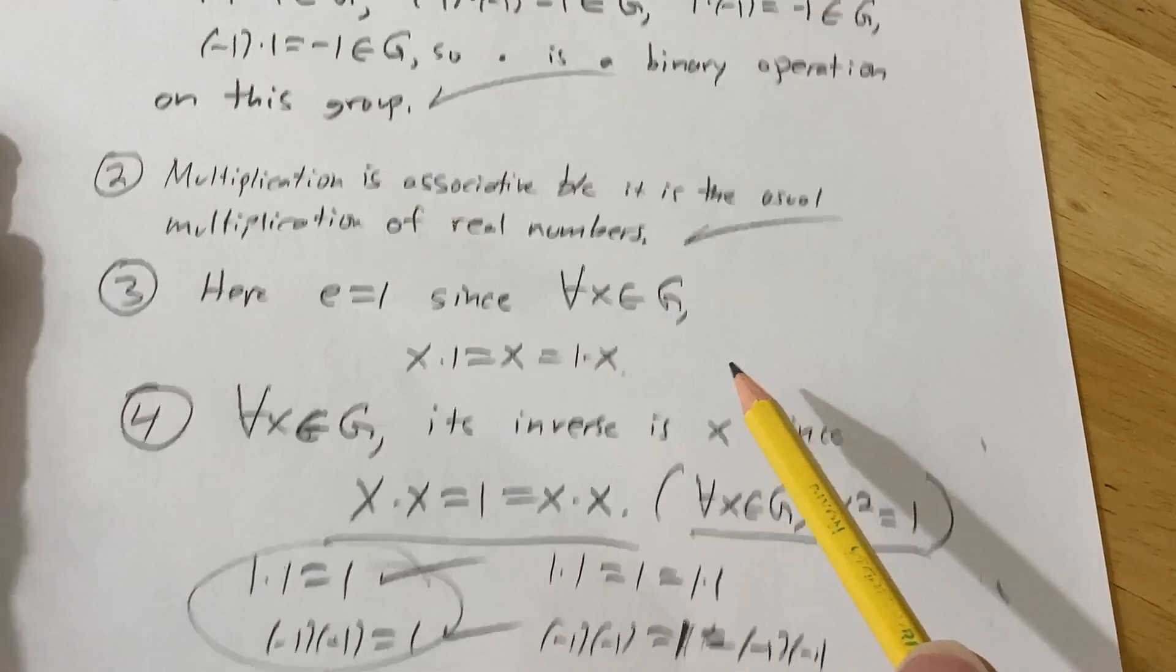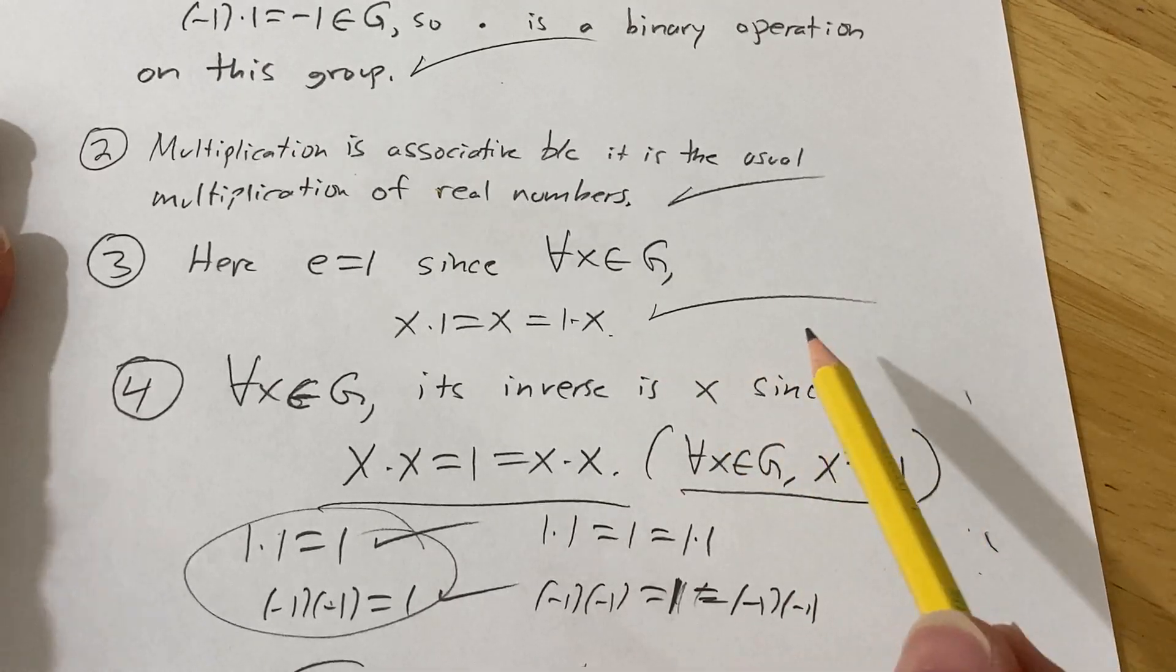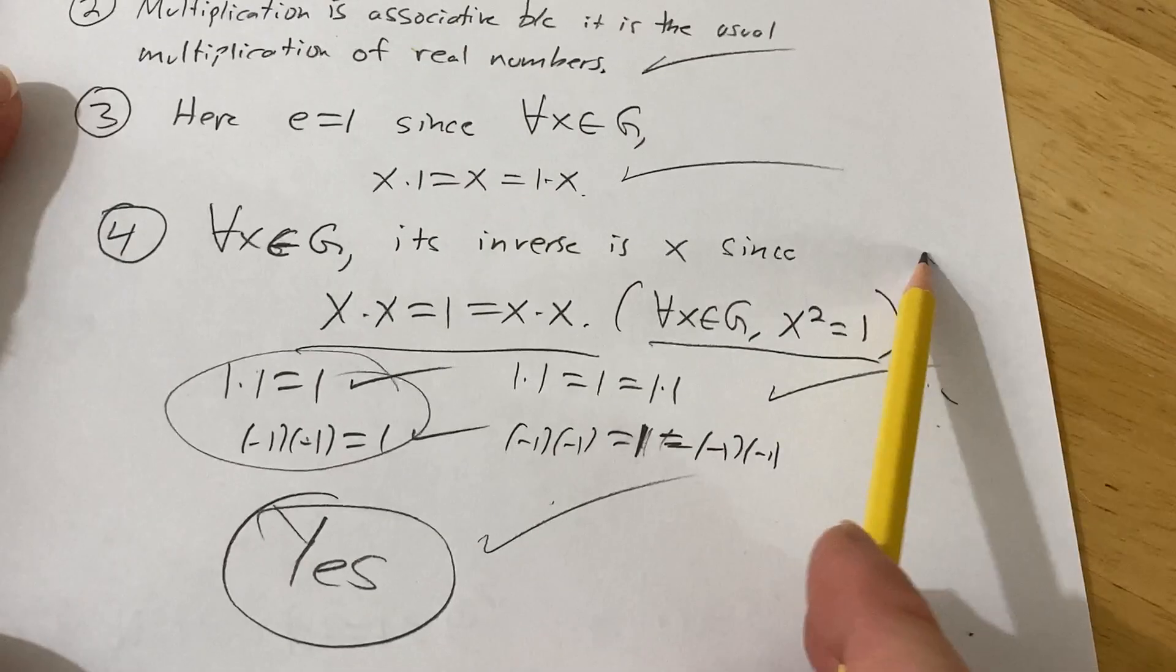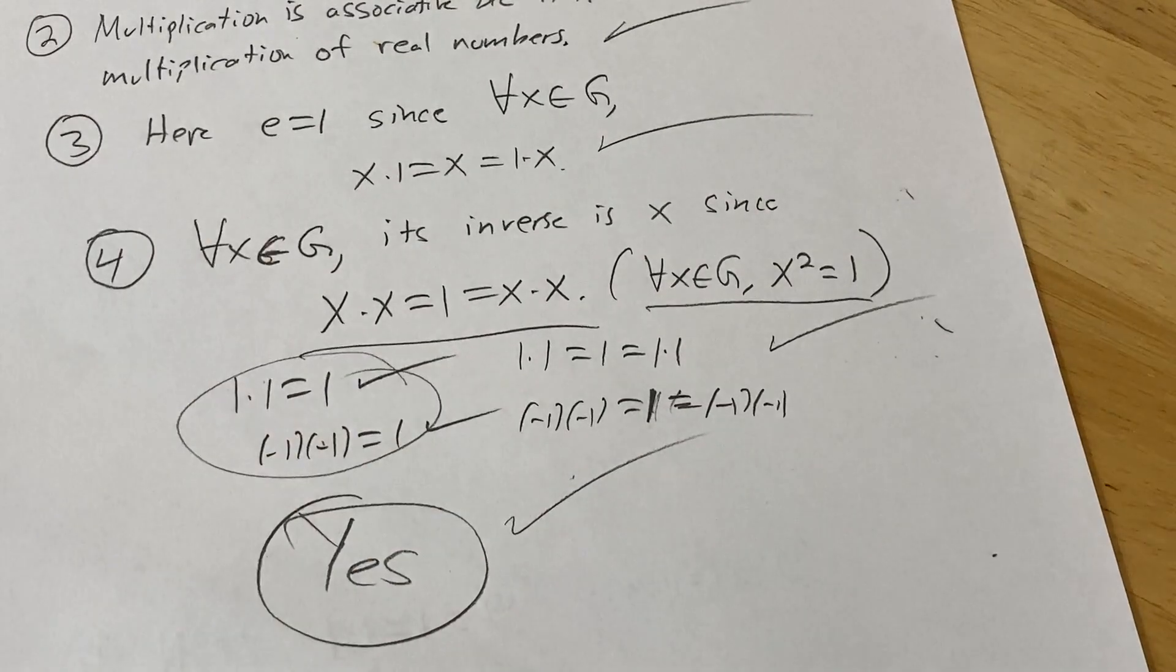You have to check if it's a binary operation, if multiplication is associative, the existence of an identity, and every element has to have an inverse. In this case, everything was satisfied, and so all was good. Good luck.